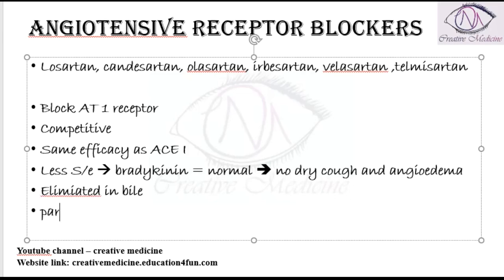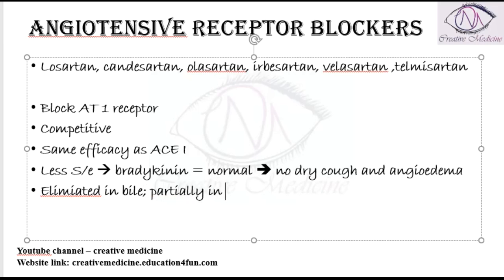Angiotensin receptor blockers are eliminated mainly by the bile, whereas partially they are eliminated by the kidneys.